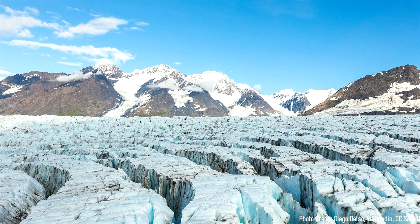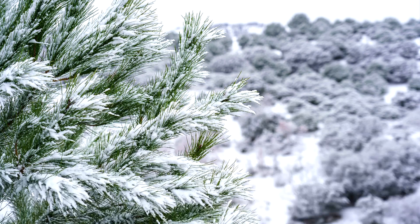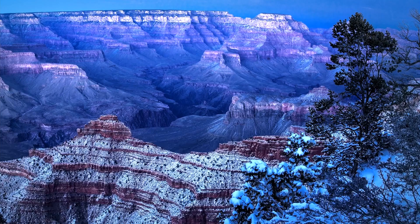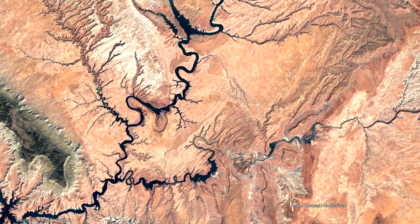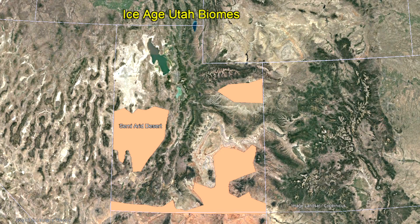34,000 years ago, the latest glacial period was still ongoing as a thick glacial ice sheet stretched across all of Canada and covered the northern half of Washington state. The planet as a whole was much cooler, and as a result, the biomes and rainfall rates of typically dry areas were far higher than they are at present. While the southern third of Utah was still a dry, semi-arid desert, it received a greatly increased level of rainfall and snowfall.